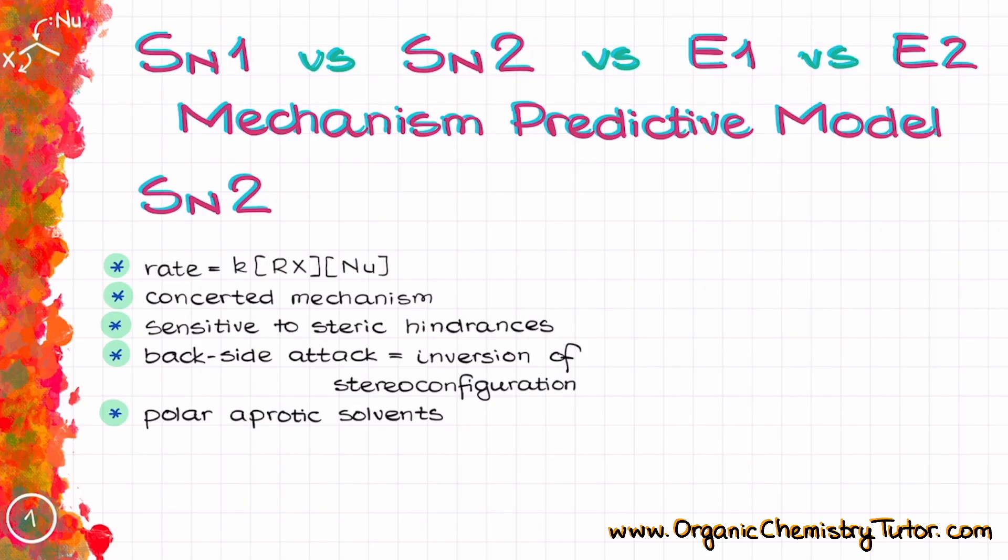The SN2 reactions are bimolecular reactions, which means that their rate depends on the concentration of both the substrate and the nucleophile. They are also concerted processes, which means that we are not going to be forming any kind of intermediate whatsoever. The SN2 reactions have a strict requirement to the nature of the nucleophilic attack, namely they require the backside attack, which makes them extremely sensitive to any kind of steric hindrances and causes the inversion of the stereochemical configuration in the molecule.